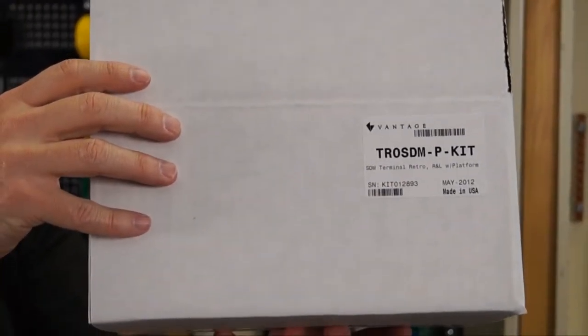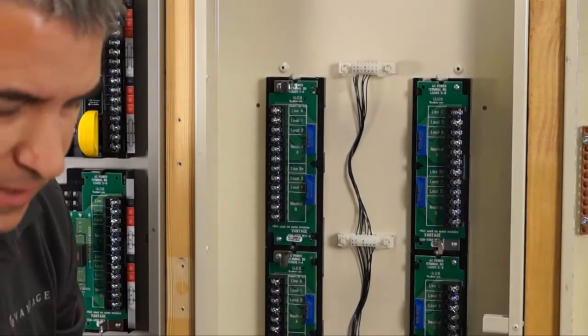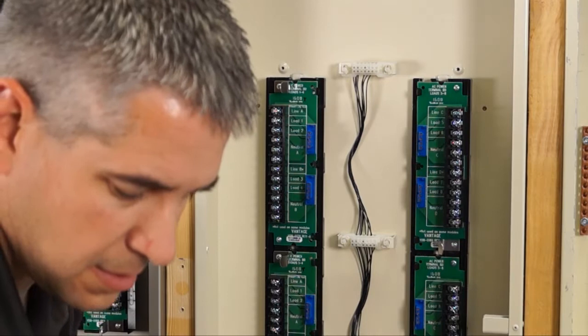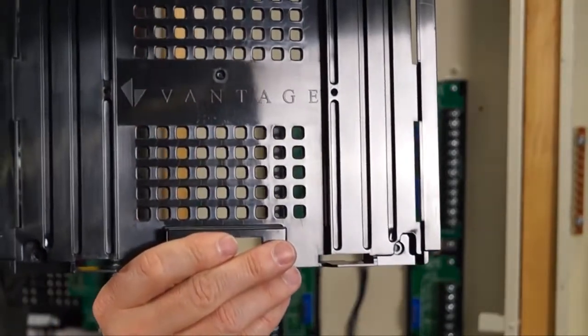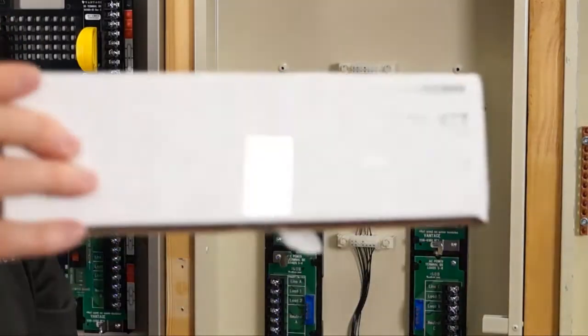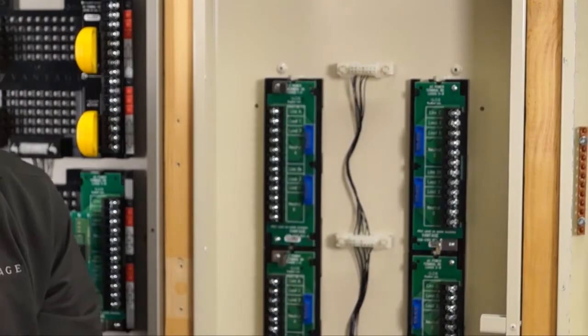It's the TRO SDM-P-Kit. That kit consists of the back plane plastic like it was in the new enclosure and a TRO SDM kit and some extra screws to mount that into.